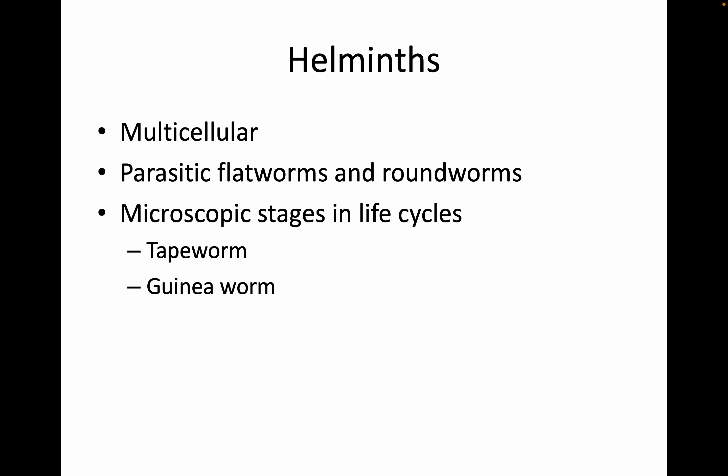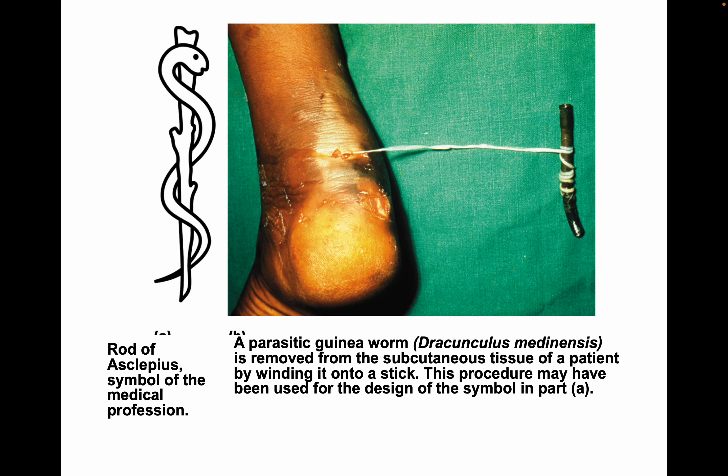Helminths are multicellular worms — parasitic flatworms and roundworms that have microscopic stages in their life cycles, like tapeworm and guinea worm. A parasitic guinea worm is removed from the subcutaneous tissue of a patient by winding it onto a stick. This procedure may have been used for the design of the rod of Asclepius, the symbol of the medical profession.